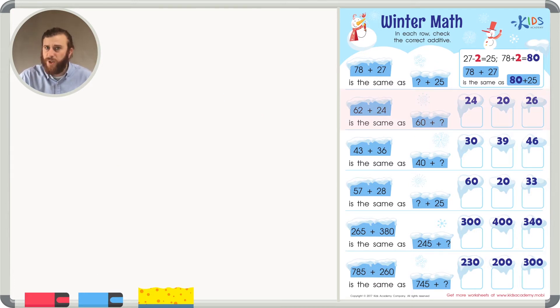We have 62 plus 24 is the same as 60 plus blank. So first, let's write our equation of 62 plus 24. I see that we're changing 62 into 60. Again, I have to ask myself, how did I get from 62 to 60? Well, I had to take some away.